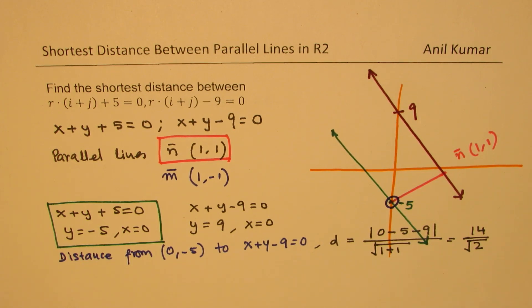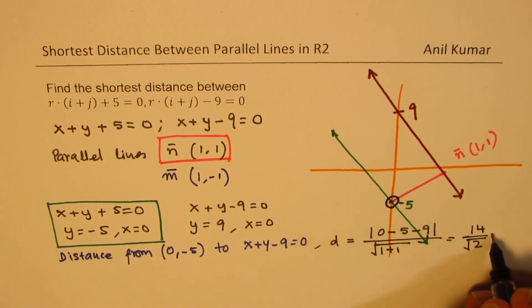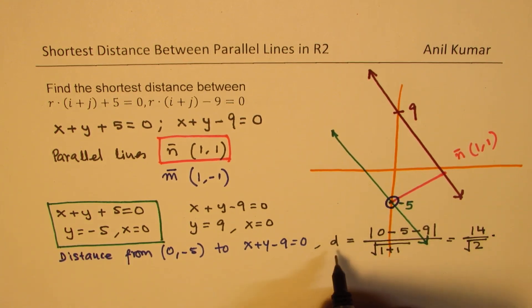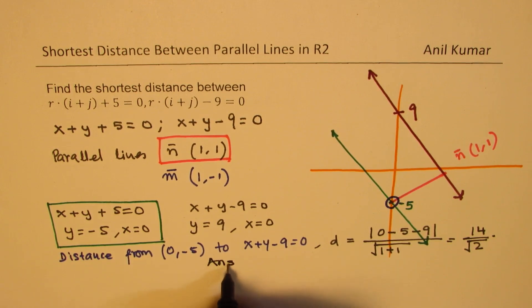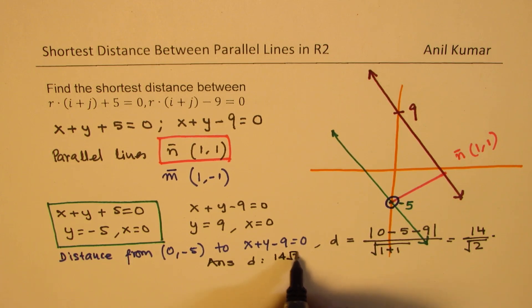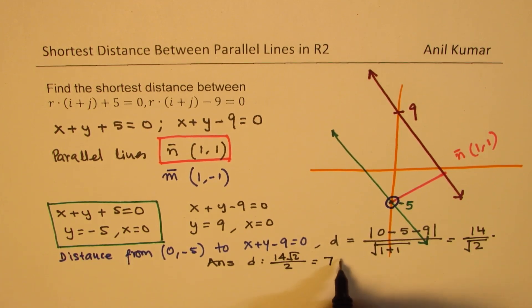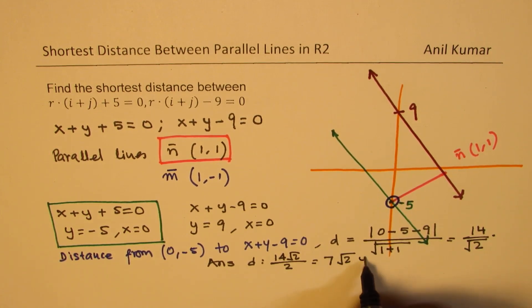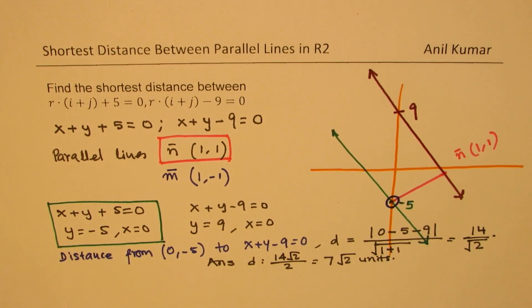The shortest distance for the first example is 14 over square root of 2, which simplifies to 14√2 over 2, or 7√2 units.